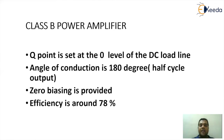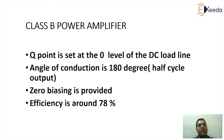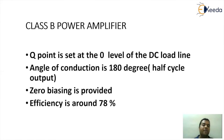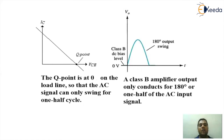A Class B power amplifier has the Q-point at the zero level of the DC load line, essentially on the x-axis. The angle of conduction is 180 degrees — even if a full cycle is given as input, the Class B circuitry will utilize only half of the cycle, so the output will be only a half cycle. This is done using zero biasing. To convert a Class A circuit to Class B, simply eliminate the biasing network. The efficiency of Class B goes up to around 78 percent, compared to Class A's 50 percent.